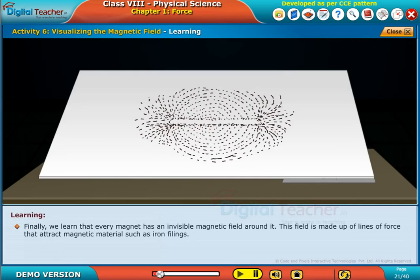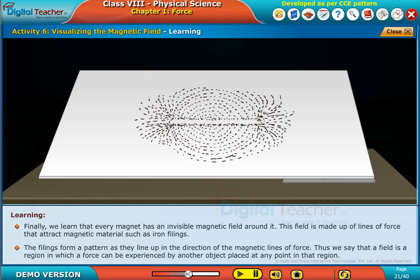Finally, we learned that every magnet has an invisible magnetic field around it. This field is made up of lines of force that attract magnetic material such as iron filings. The filings form a pattern as they line up in the direction of the magnetic lines of force.